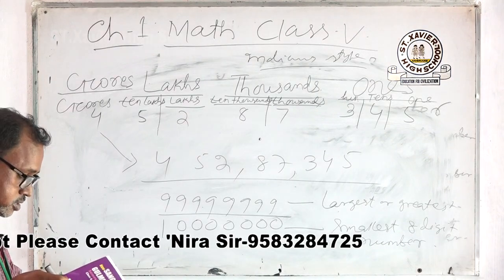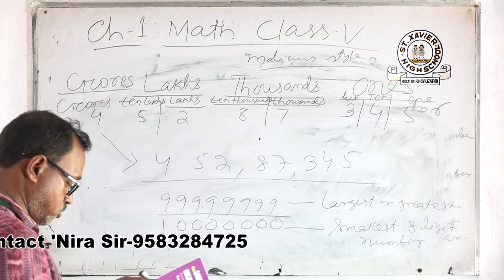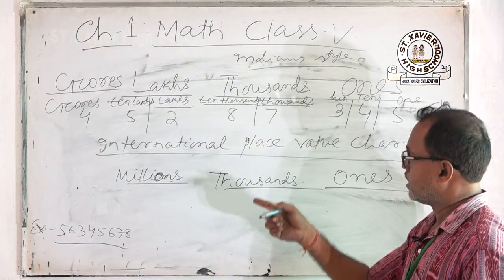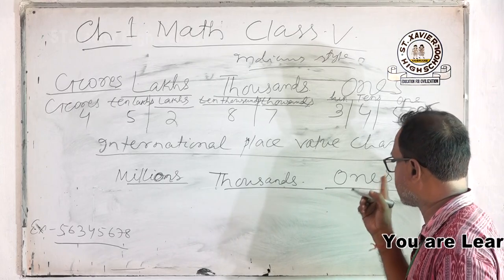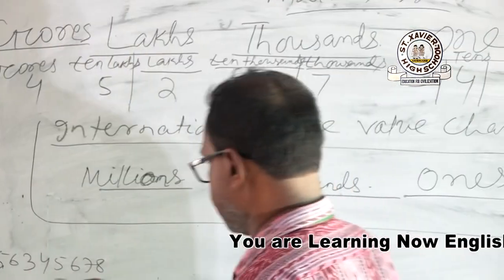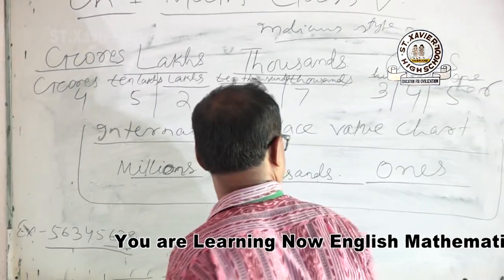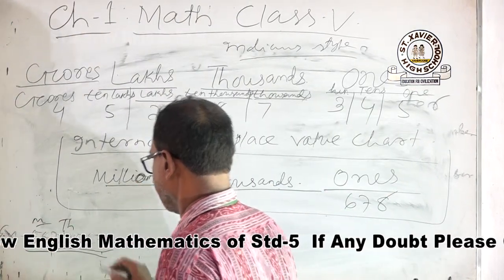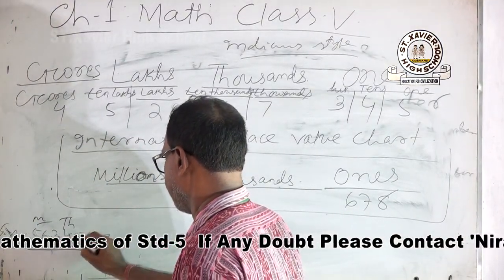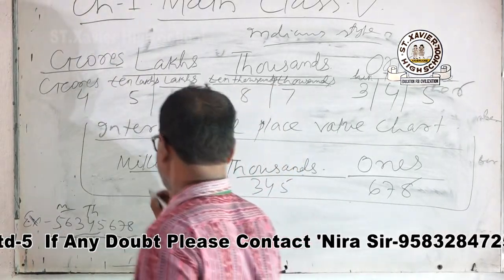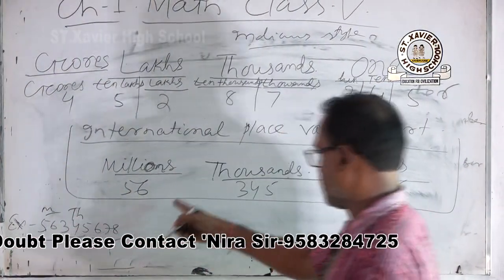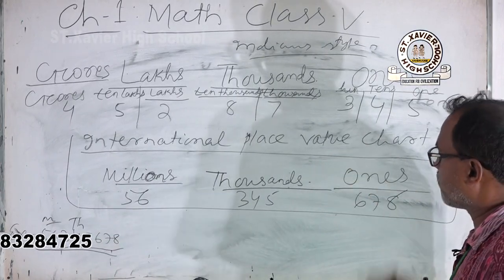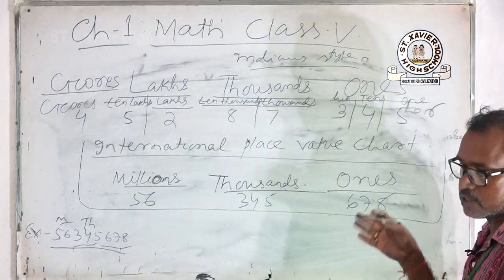If you learn millions, thousands, and ones, it will be the international place value chart. For this number, we arrange it in international style to find its place value. First write 3 digits in ones, then 6, 7, 8 in thousands, then the millions. So it becomes 56 millions. For example, 3,45,678 — we arrange and find the place value of 8-digit or 7-digit numbers in this way.